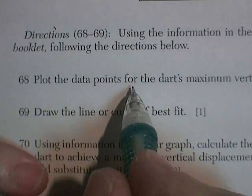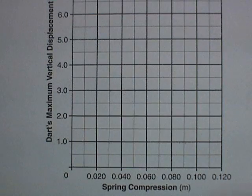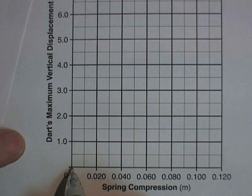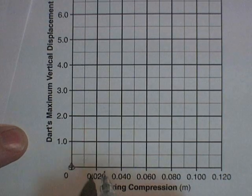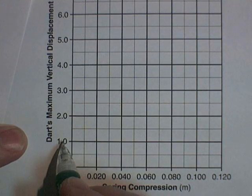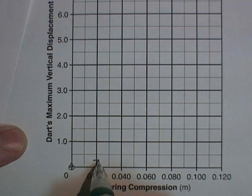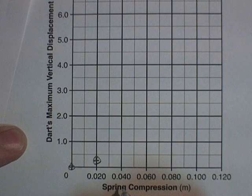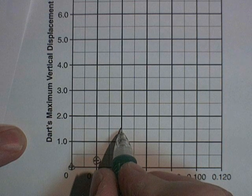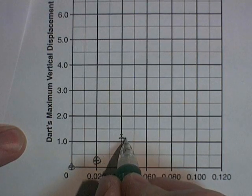68. Plot the data points for the dart's maximum vertical displacement versus the spring compression. Well, that's just a matter of transferring some data. Our spring compression of zero, it goes up in the air zero meters. Our spring compression of 0.02, it goes up 0.29. Well, if that's one, that would be a half. This would be just more than a half. So I'm going to put one here. At 0.04, it goes up 1.14. So there's one meter. There's 1.5. 1.25. All right, so I'm going right out here.